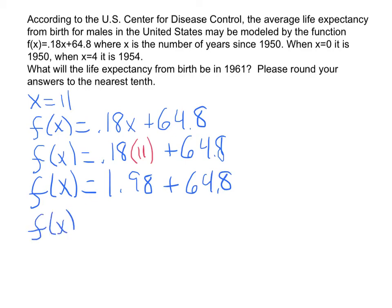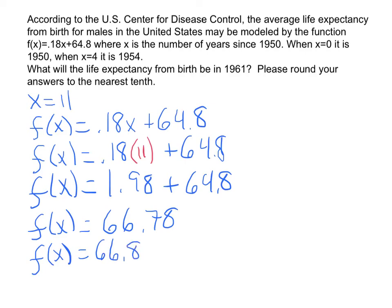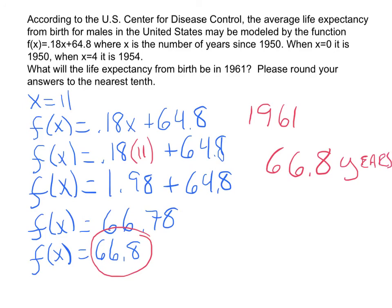So F of X equals 66.78. On this particular problem it asks to round your answers to the nearest tenth — the tenth is the first decimal — so F of X would equal 66.8. On the online system, write just 66.8 as your answer; don't write the F of X. On a test or paper homework, F of X equals 66.8 is fine. What this basically means is that in 1961, the life expectancy for the average male is 66.8 years — the average male will live to be 66.8 years old.